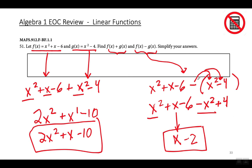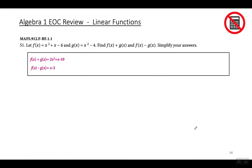Esta parte es fácil, pero cuando restan tienen que distribuir el signo negativo a cada uno de los términos — esta es la parte que muchos de ustedes no se van a dar cuenta. Así que eso es donde te cogen. Cuando distribuyo el signo negativo, este 4 va a ser positivo, y esto sería mi respuesta final cuando combino los términos iguales.